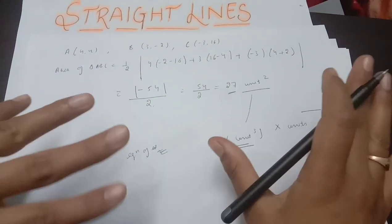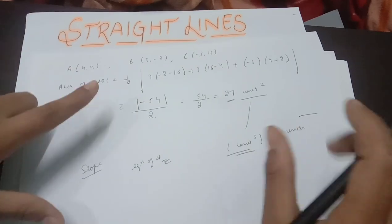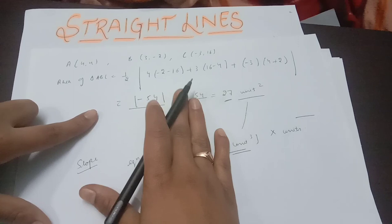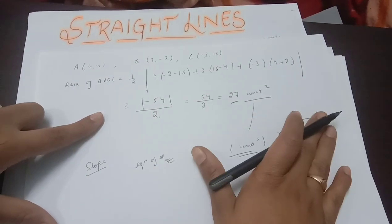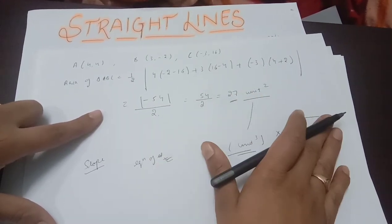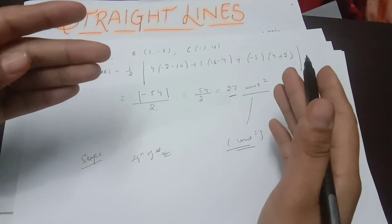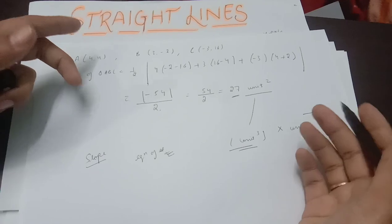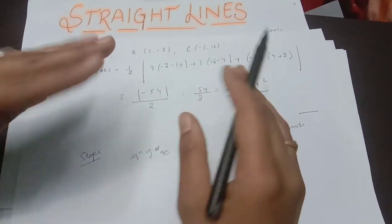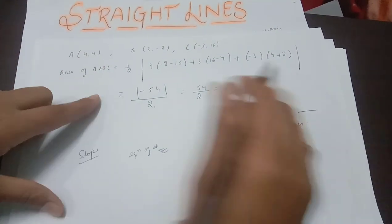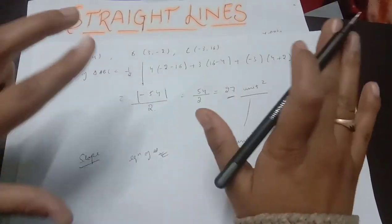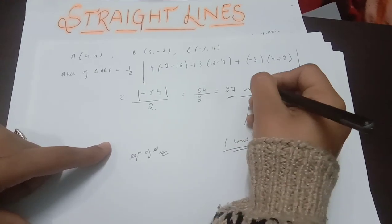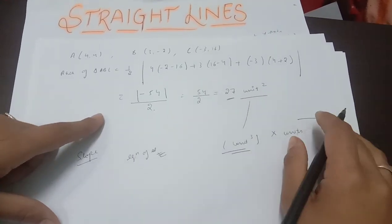That is all for this video. In this video we studied basic things: the coordinate system, the distance formula, the section formula, the midpoint formula, and the area of a triangle. In the next videos, we will cover the slope of a line, various forms of the equation of a line, and the general equation of a line. Please keep in touch with us. Thank you.